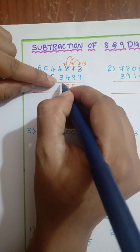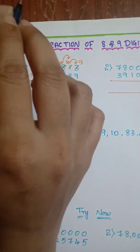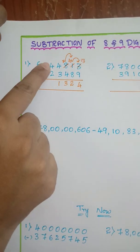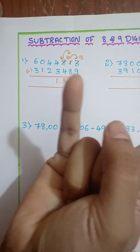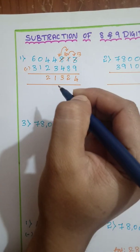Here 4 minus 3 is 1. 4 minus 2. Here very easy. Either you can do 4 minus 2 is 2 or else 4 minus 2. So from 2, you just have a count, 3, 4. Same answer you will get.